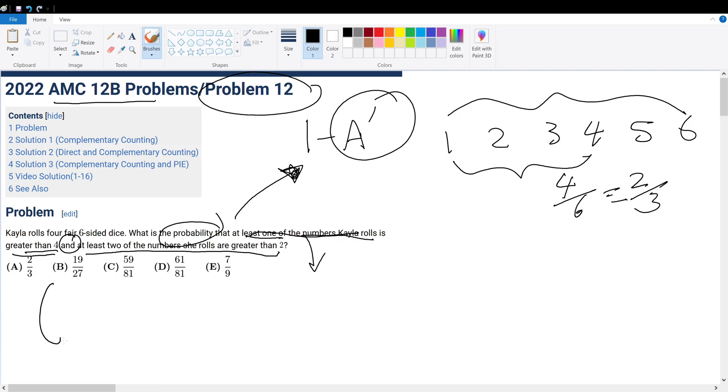So, the probability that all dice are less than or equal to 4 is 2 thirds to the power of 4, because she rolled 4 dice.